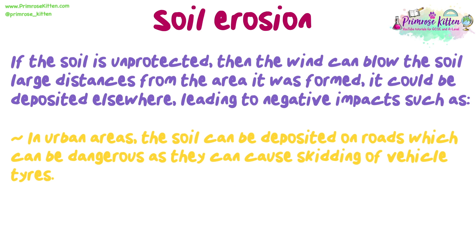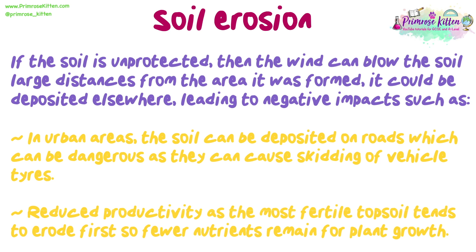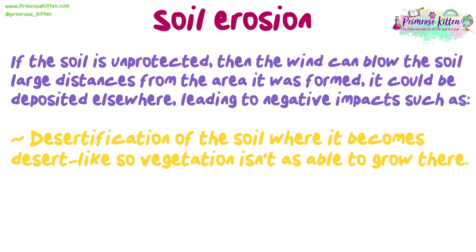In urban areas, the soil can be deposited on roads, which can be dangerous as it can cause skidding of vehicle tyres. Reduced productivity, as the most fertile topsoil tends to erode first, so fewer nutrients remain for plant growth. Desertification of the soil, where it becomes desert-like, so vegetation isn't as able to grow there.